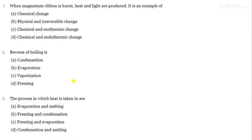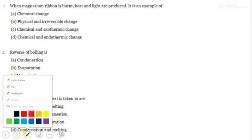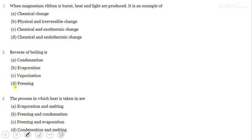First question: Magnesium ribbon is burned and heat and light are produced. The options are: physical and irreversible, chemical and exothermic, or chemical and endothermic reaction. Since something is burning, it is fixed that this is a chemical change — it cannot be a physical change.